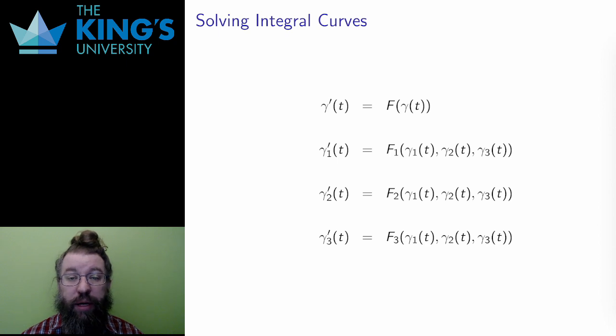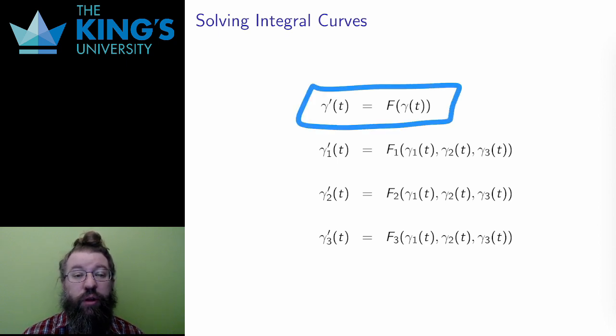The definition of a parametric curve is a curve γ such that the derivative is equal to the function evaluated along the curve, the definition of an integral curve that is. In this context, f is known, but γ is unknown. How do I calculate γ?